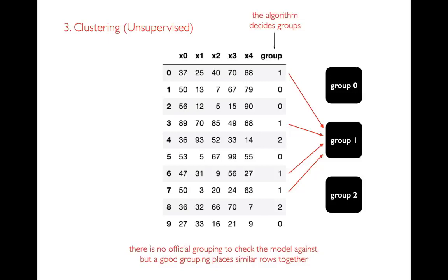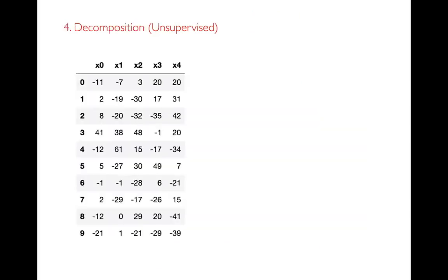You can imagine lots of reasons to do clustering. Maybe each row represents a different user for your web application. If you can identify ten different kinds of users, you could run a different marketing campaign for each group. Clustering is unsupervised because there's no label column you're trying to predict. The last kind of machine learning we'll talk about this semester — probably the most complicated — is decomposition. Decomposition is also unsupervised because, again, there's no column you're trying to predict.